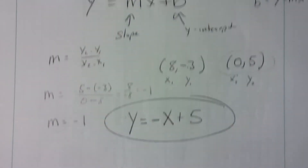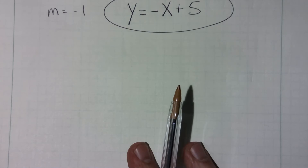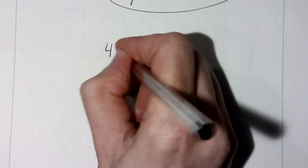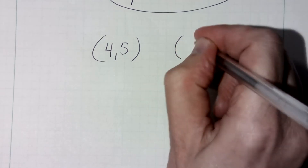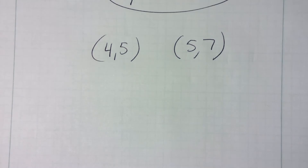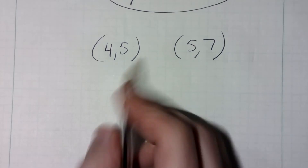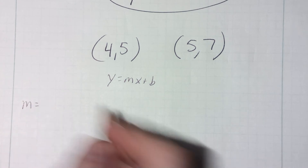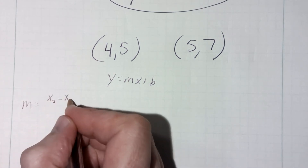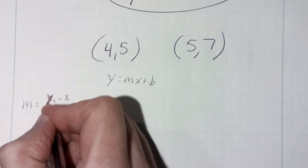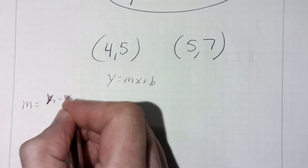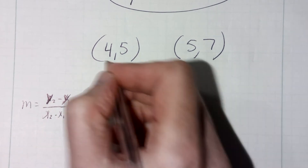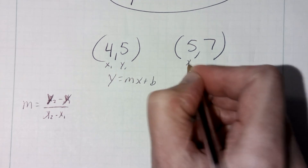So let's do one where we have to actually find the b value. Let's do another one where I don't give us the y-intercept. Let's do the points (4, 5) and (5, 7). First thing again, y equals mx plus b. We're going to find our m value using y2 minus y1 divided by x2 minus x1. If you need to, label this x1, y1 and this x2, y2.